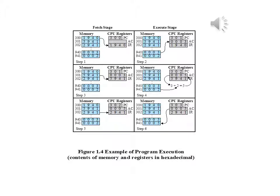Most modern processors include instructions that contain more than one address. Thus, the execution stage for a particular instruction may involve more than one reference to memory. Also, instead of memory references, an instruction may specify an I/O operation.